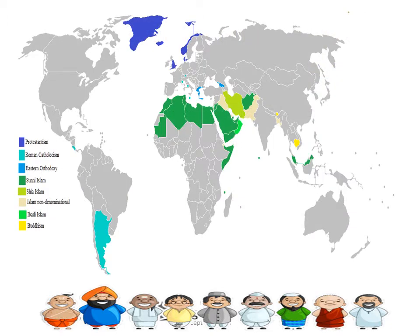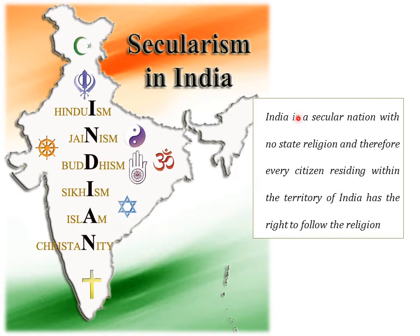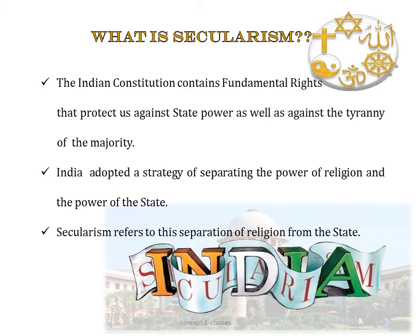This is a map showing countries with state religion. The blue color shows states favoring Christianity, green shows states supporting Islam, and yellow shows Buddhism. In all these cases, when a state favors one religion, acts of discrimination take place. In India, however, the state cannot discriminate against citizens on the ground of religion. India is a secular nation with no state religion, and therefore every citizen residing within the territory of India has the right to follow their own religion.